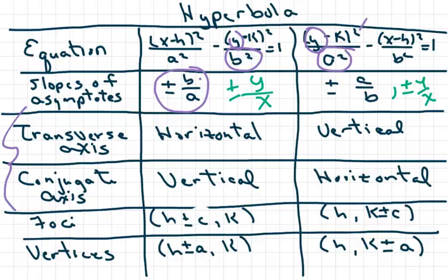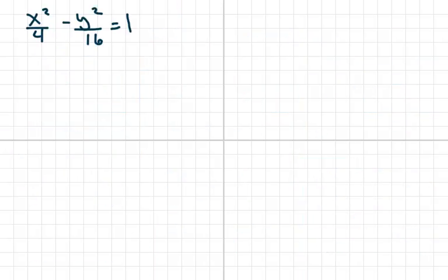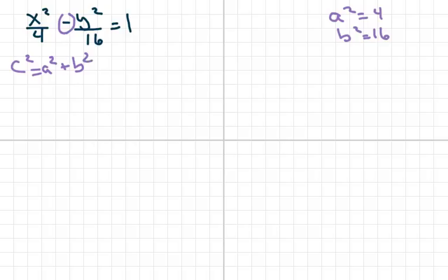We're going to do basic simple ones — it's a few extra steps compared to the ellipse but not hard once you get used to them. The first one is a hyperbola because it has a negative in front of one term. A is under the x, so a squared is 4 and b squared is 16. Since c squared equals a squared plus b squared, c squared equals 20.